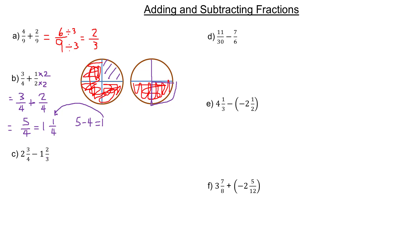But most of the time — probably 19 times out of 20 — it's a good idea to change them into improper fractions. So two and three-quarters: we want to figure out how many quarters that will be. And this one here is thirds. Then we'll talk about how you get the common denominator.